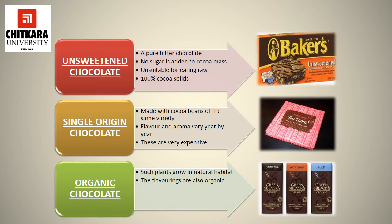Unsweetened chocolate, also called bitter or baking chocolate, is pure chocolate liquor. It must contain 50–58% cocoa butter. Depending on the brand, other flavorings such as vanilla or salt may be present. Single origin chocolate is made with cocoa beans of the same variety. Its flavor and aroma may vary year by year, and these are very expensive chocolates.